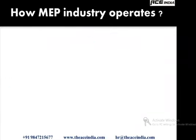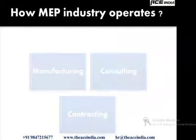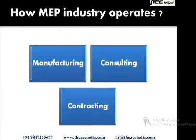The MEP industry operates through three types of companies: manufacturing companies, consulting companies, and contracting companies. Manufacturing companies produce equipment — for example, Siemens manufactures motors and supplies them to air conditioning companies like Blue Star, or supplies sensors and actuators to diesel generator manufacturers like Cummins or Caterpillar.